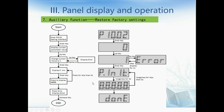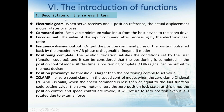In this chapter, there are some relevant terms for the servo drive. The first is the electronic gear: when the servo drive receives one position reference, it defines the actual displacement the motor rotates or moves. The second is the command unit — the resolvable minimum value input from the host device to the servo drive. The encoder unit is the value of the input command after processing by the electronic gear ratio.